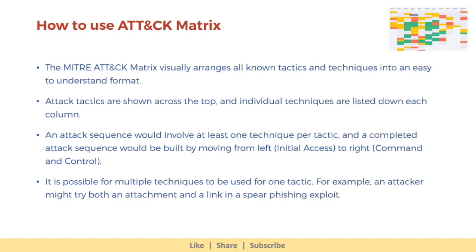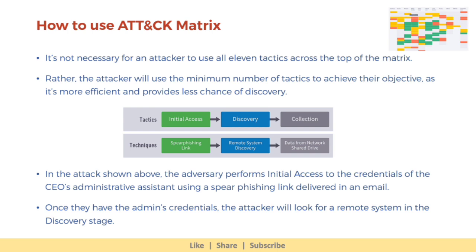The MITRE ATT&CK matrix visually arranges all known tactics and techniques into an easy-to-understand format. Attack tactics are shown across the top, and individual techniques are listed down each column. An attack sequence would involve at least one technique per tactic, and a completed attack sequence would be built by moving from left — that is initial access — to right, which is command and control. It is possible for multiple techniques to be used for one tactic. For example, an attacker might try both an attachment and a link in a spear phishing exploit. It's not necessary for an attacker to use all 11 tactics across the top of the matrix; rather, the attacker will use the minimum number of tactics to achieve their objective, as it's more efficient and provides less chance of discovery.